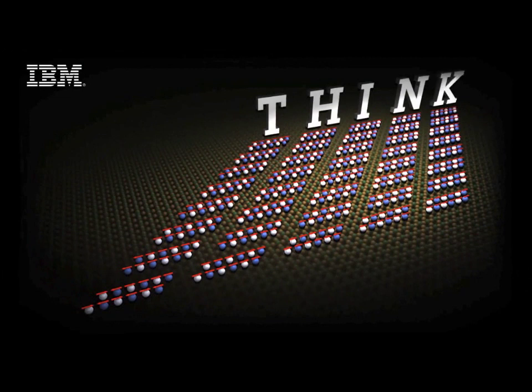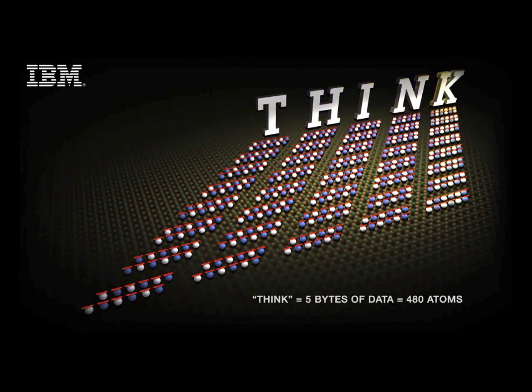In this example here, we have five of those, and they store different information in them. In this case, the letters T-H-I-N-K.